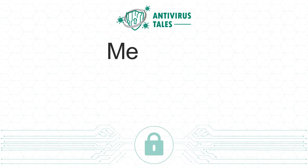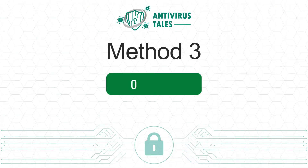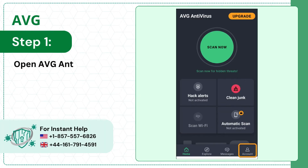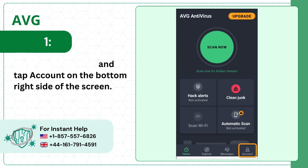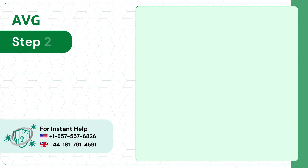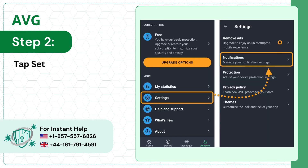Method 3, on Android. Step 1: open AVG antivirus and tap Account on the bottom right side of the screen. Step 2: tap Settings and select Notifications.